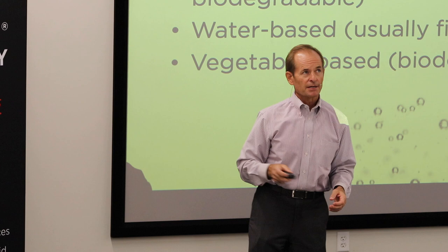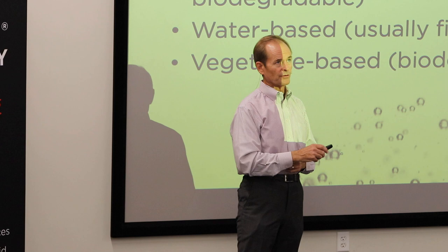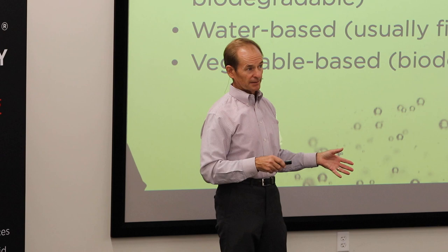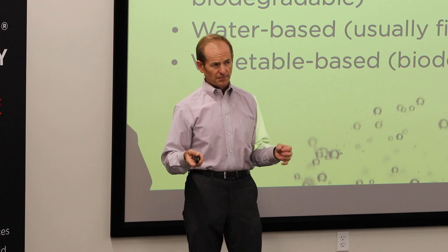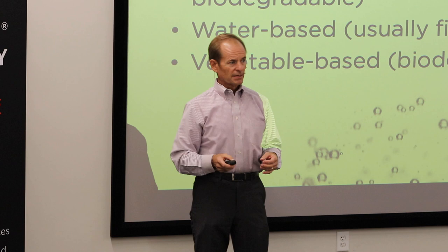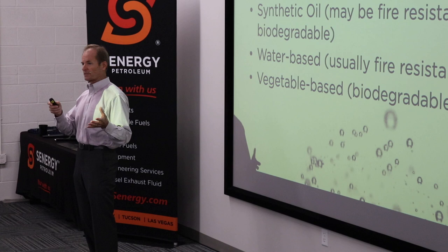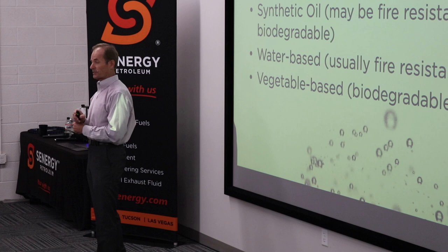The fourth kind of base stock you may see from time to time is vegetable-based, or vegetable oil-based. These are usually chosen because of their biodegradability. Vegetable-based stocks generally suffer from not having as good oxidation life, so they don't last as long in the equipment. They're also very expensive — some vegetable oils are more expensive than synthetics. There are places that actually require the use of vegetable-based hydraulic oils.